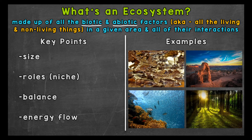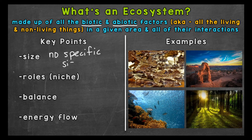First, we will discuss size. How big is an ecosystem? Well, the short answer is they have no particular size requirements. Ecosystems can be small, like a puddle or tree, or as large as a desert, forest, or coral reef. The size of an ecosystem depends on the given area being looked at. Ecosystems can be in water or on land — an ecosystem can be anywhere.